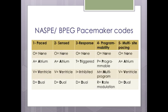Pacemaker codes consist of five international positions or letters that code pacemaker function and characteristics. The first position is the chamber paced, which may be None, Atrium, Ventricle, or Dual. The second position is the chamber sensed, also None, Atrium, Ventricle, or Dual.